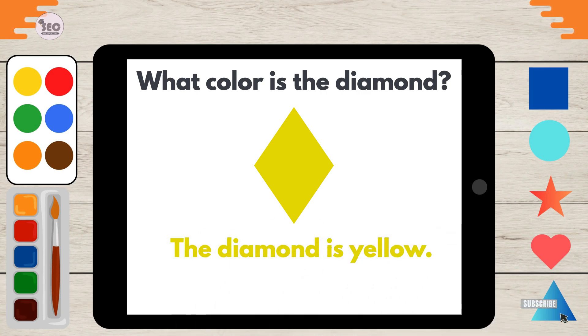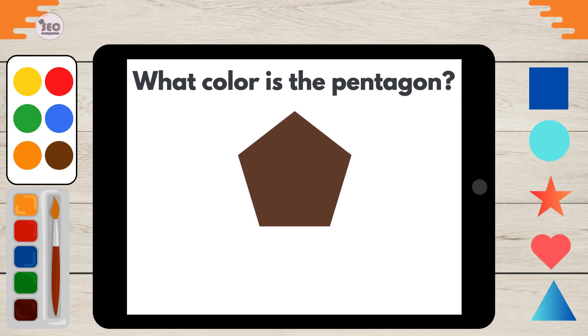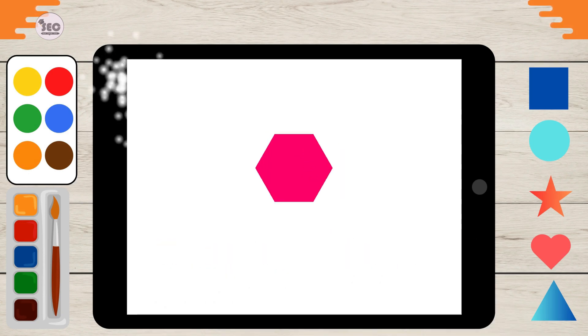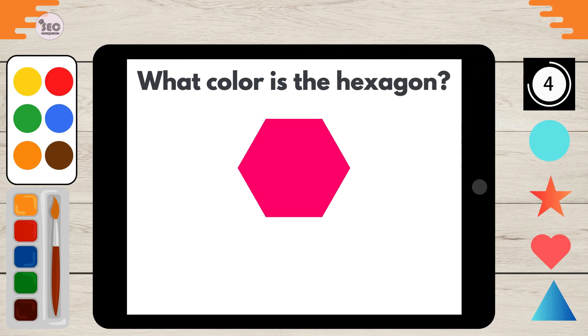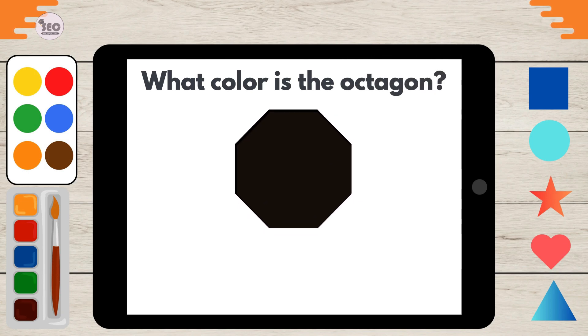The diamond is yellow. What color is the pentagon? The pentagon is brown. What color is the hexagon? The hexagon is pink. What color is the octagon?